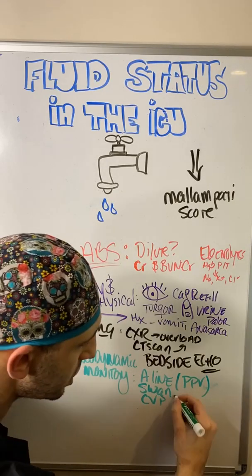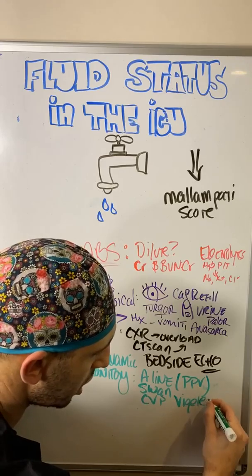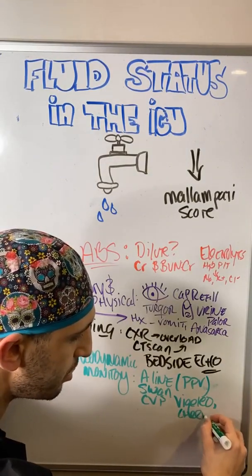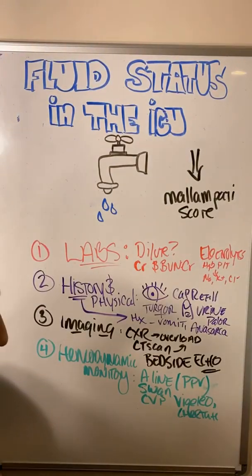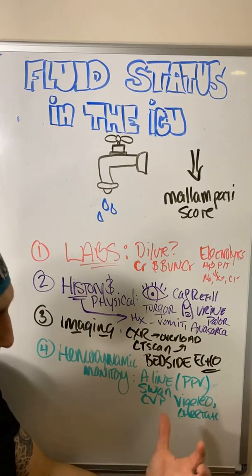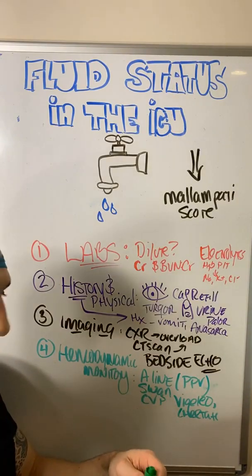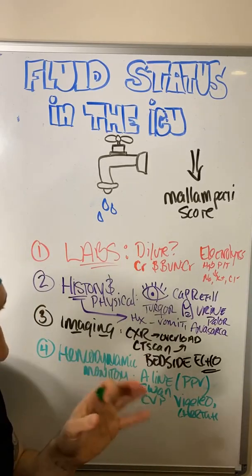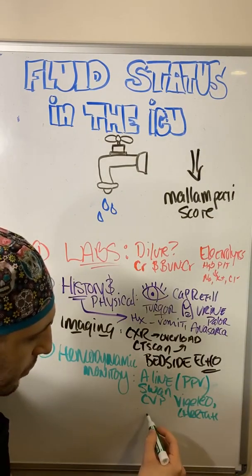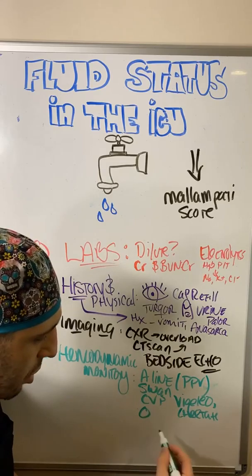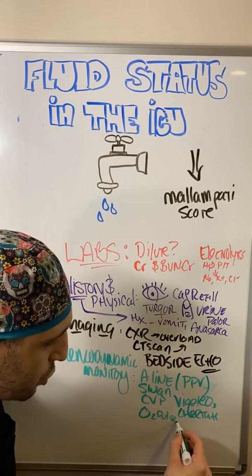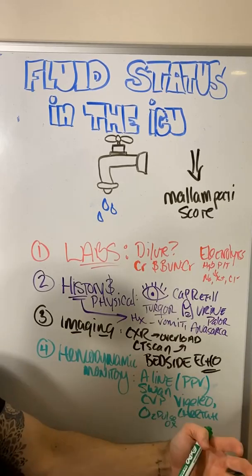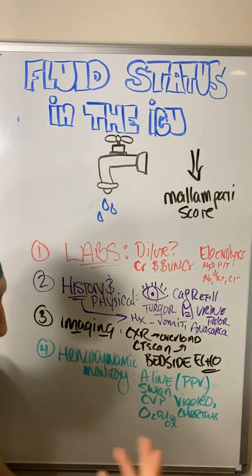There are newer devices like the Vigileo and the Cheetah, which use electroimpedance across the body to estimate fluid status based on how fast a signal travels from one side to the other. They're cool machines, though some call them random number generators — the validation isn't great currently. Even the pulse ox waveform gives you information, since the pulse ox is dependent on a pulse and volume moving through, giving you an idea of volume status.